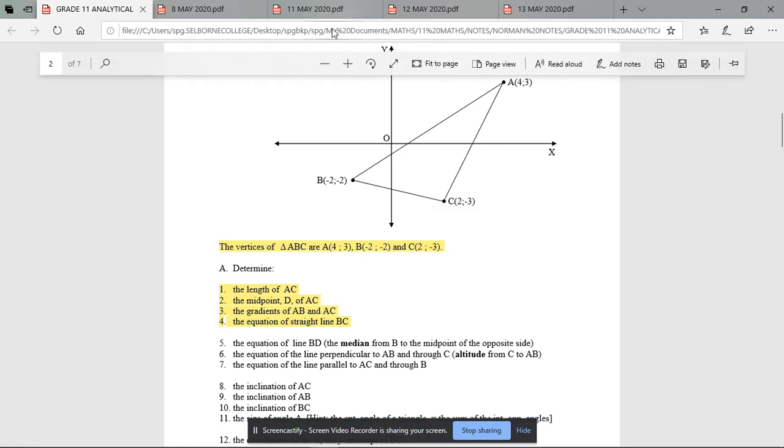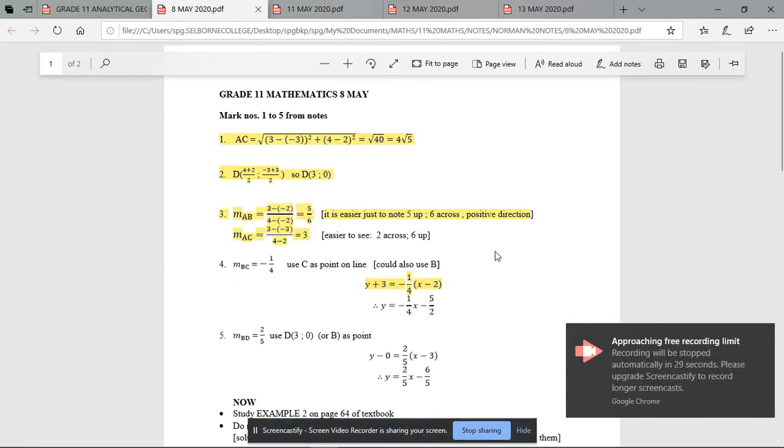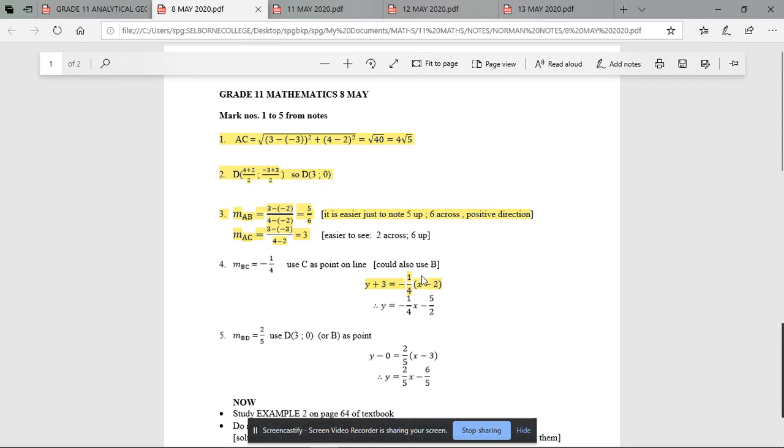So what's our formula? I'll say it again, Y minus Y1 equals M times X minus X1. So then you times this negative a quarter into the bracket there, with the X and with the negative 2, and you'll bring the positive 3 across by minusing it, and there is the equation for the line BC. Y is equal to negative a quarter X minus 5 over 2. I'll continue with the explanations in the next video. Thank you.